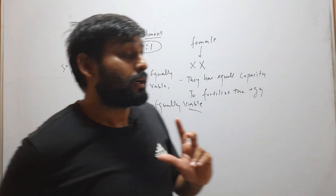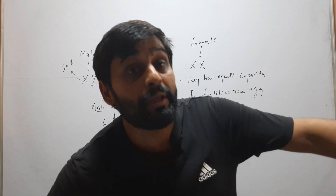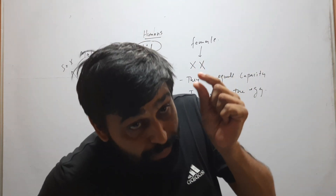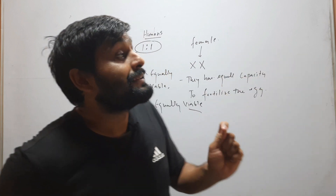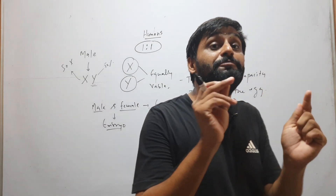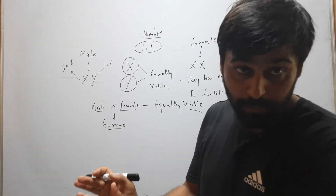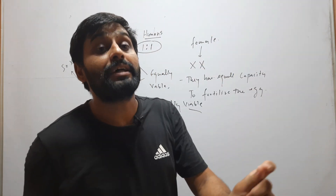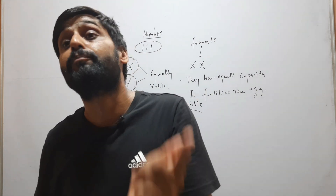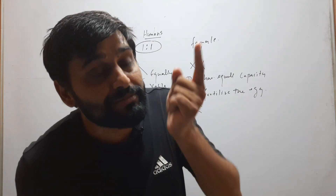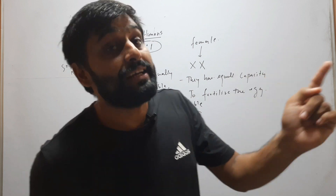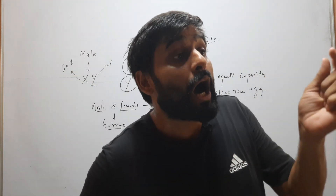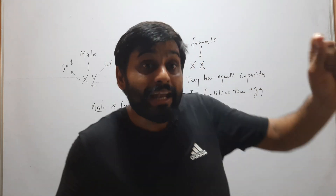There may be a primary sex ratio or a secondary sex ratio. Primary sex ratio is determined by how many male and female are conceived in the human population. Secondary sex ratio is determined by how many male and female are born. Secondary sex ratio is easier to determine.